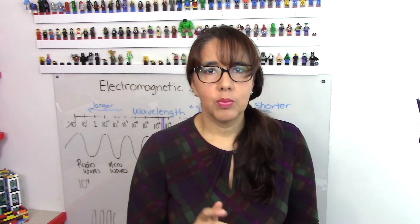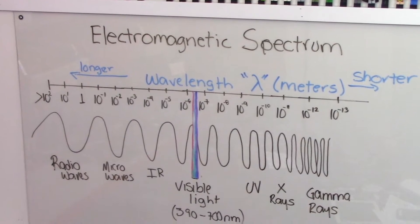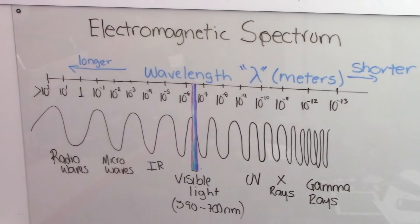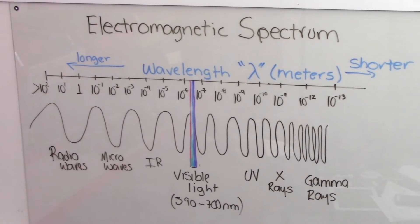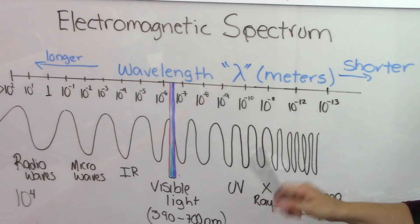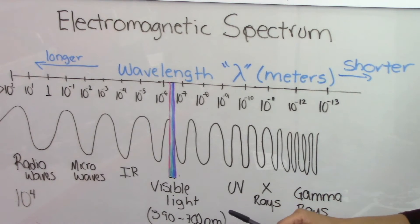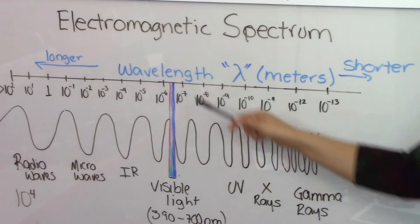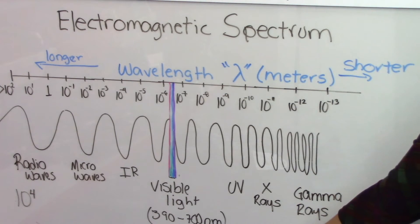Welcome to Karen's lab. Today we're going to explore the electromagnetic spectrum. The electromagnetic spectrum covers all types of electromagnetic radiation, from kilometer-long waves to waves that have the size of a fraction of an atom. The main parameters to describe the electromagnetic spectrum are wavelength and frequency.